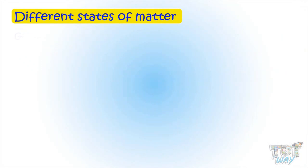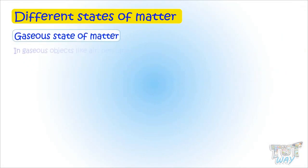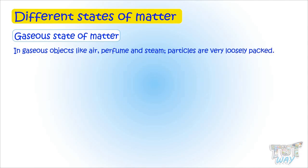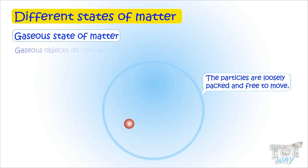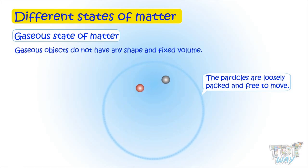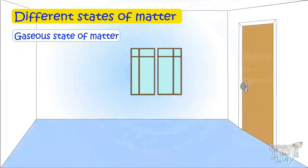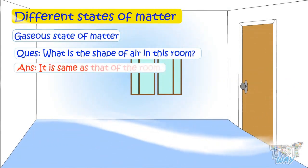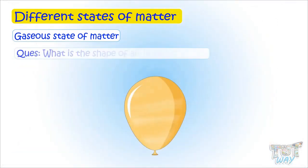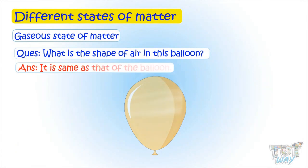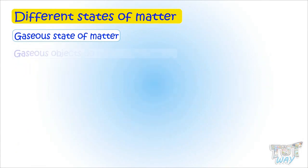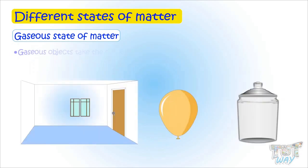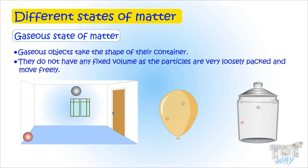The third form of matter is the gaseous state. In gaseous objects like air, perfumes, and steam, particles are very, very loosely packed — even much more loose than in liquid — and can move very freely. That is why gaseous objects do not have any shape; they take the shape of their container. What is the shape of air in this room? It is the same as that of the room. What is the shape of air in this balloon? It is the same as that of the balloon. Gaseous objects also do not have a fixed volume, as the particles are very loosely packed and free to move.